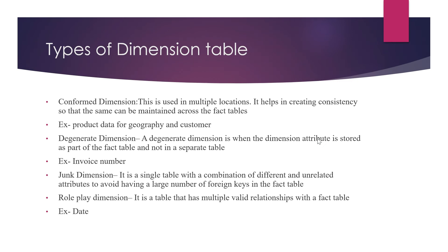Then we have the degenerated dimension. A degenerated dimension is when a dimension attribute is stored as part of the fact table and not in a separate table — like an invoice number. An invoice number doesn't have its own attributes, but based on the invoice number you can find other related data like the sale date and amounts. You will not store it in a different table but as part of your sales data. That is the degenerated type of dimension.